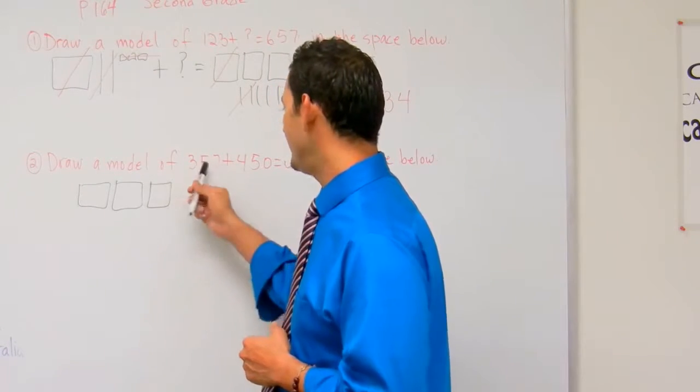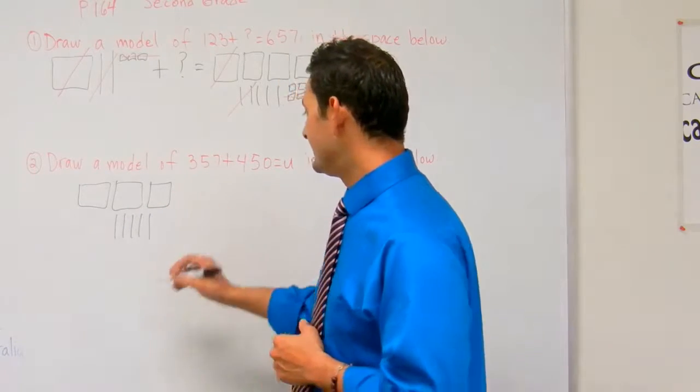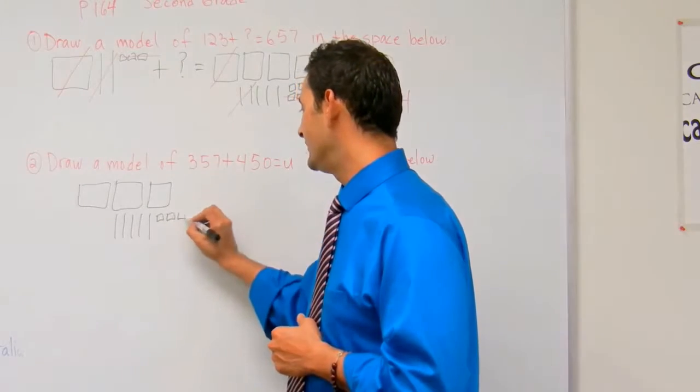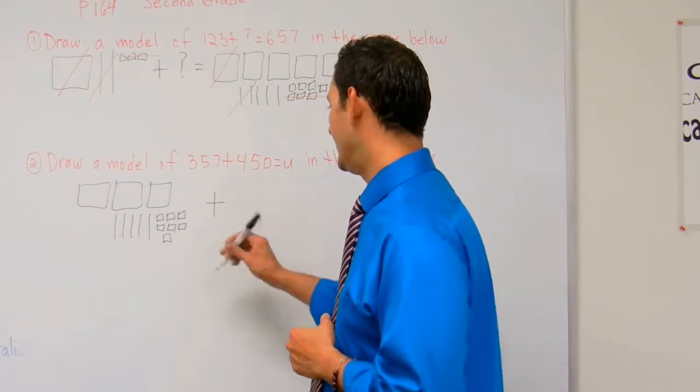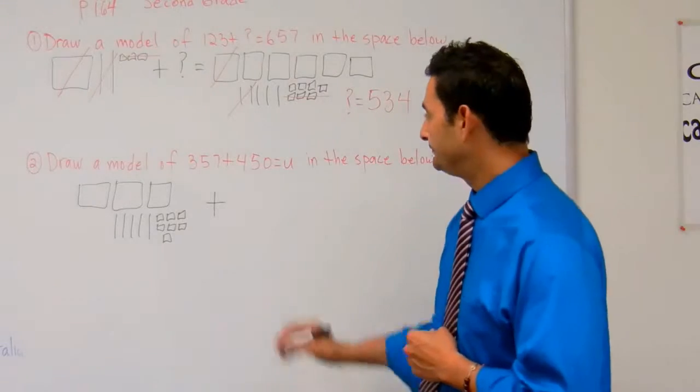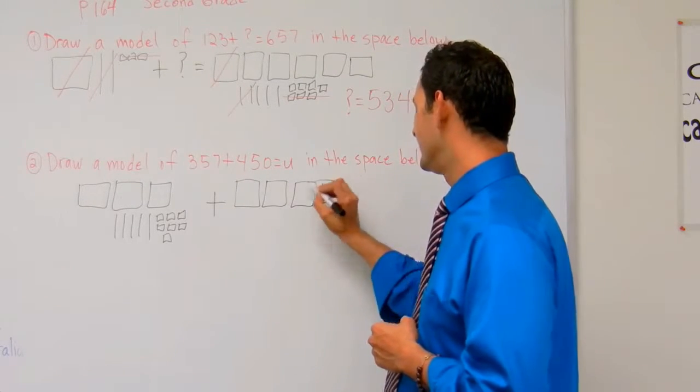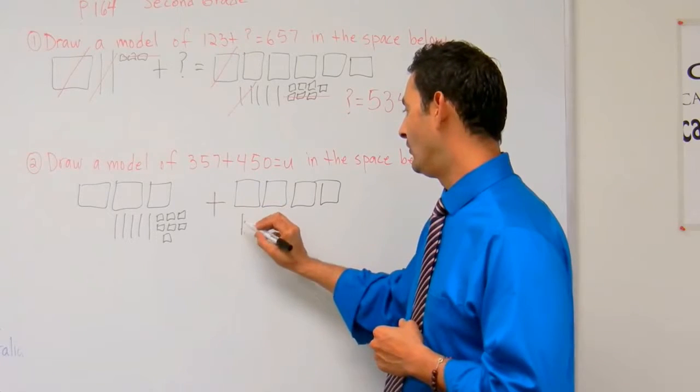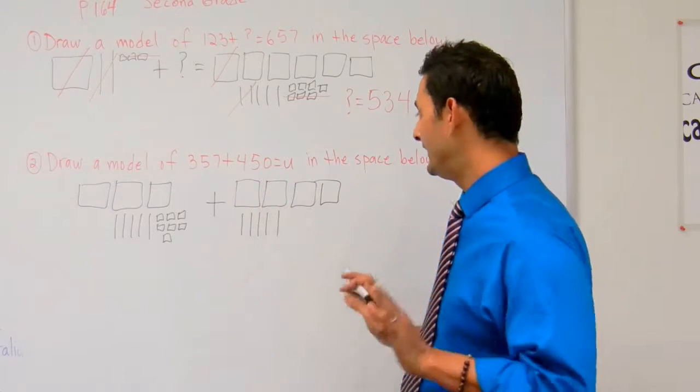Let's start with 357 first. Here we have three hundreds, five bundles of 10: one, two, three, four, five. Seven ones: one, two, three, four, five, six, seven. Plus 450. We have four blocks of 100 and five bundles of 10: one, two, three, four, five. We don't have any ones, so we leave that alone.